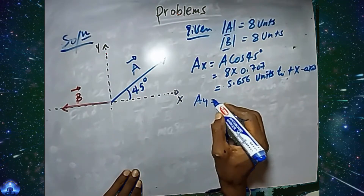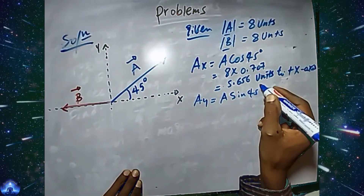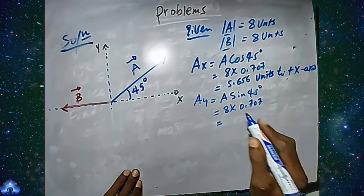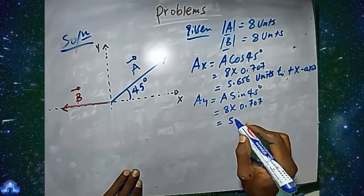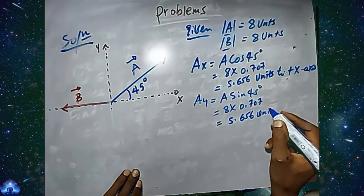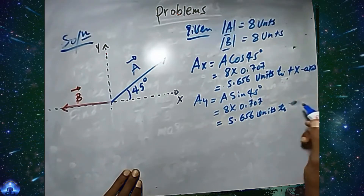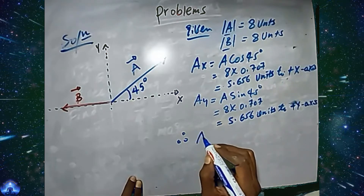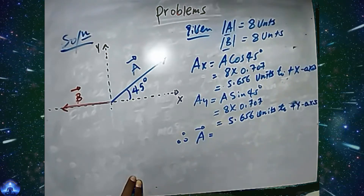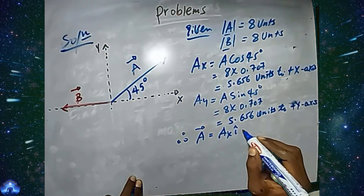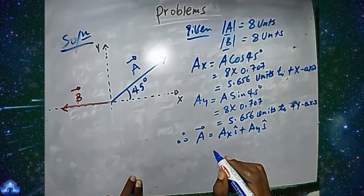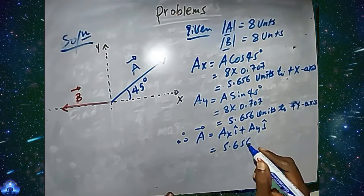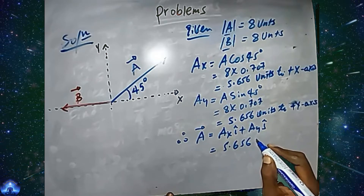Ay equals A times sin of 45 degrees, equals 8 times 0.707, which equals 5.656 units along the positive y-axis. Therefore, vector A equals Ax in the i-direction plus Ay in the j-direction, which is 5.656 i plus 5.656 j.